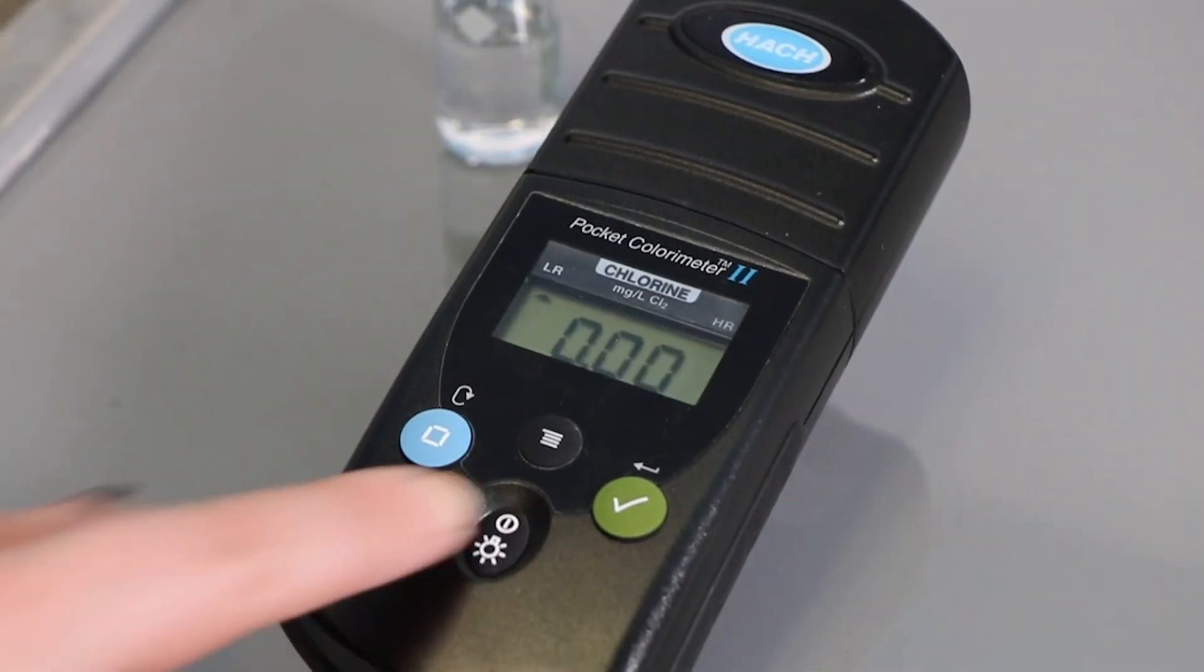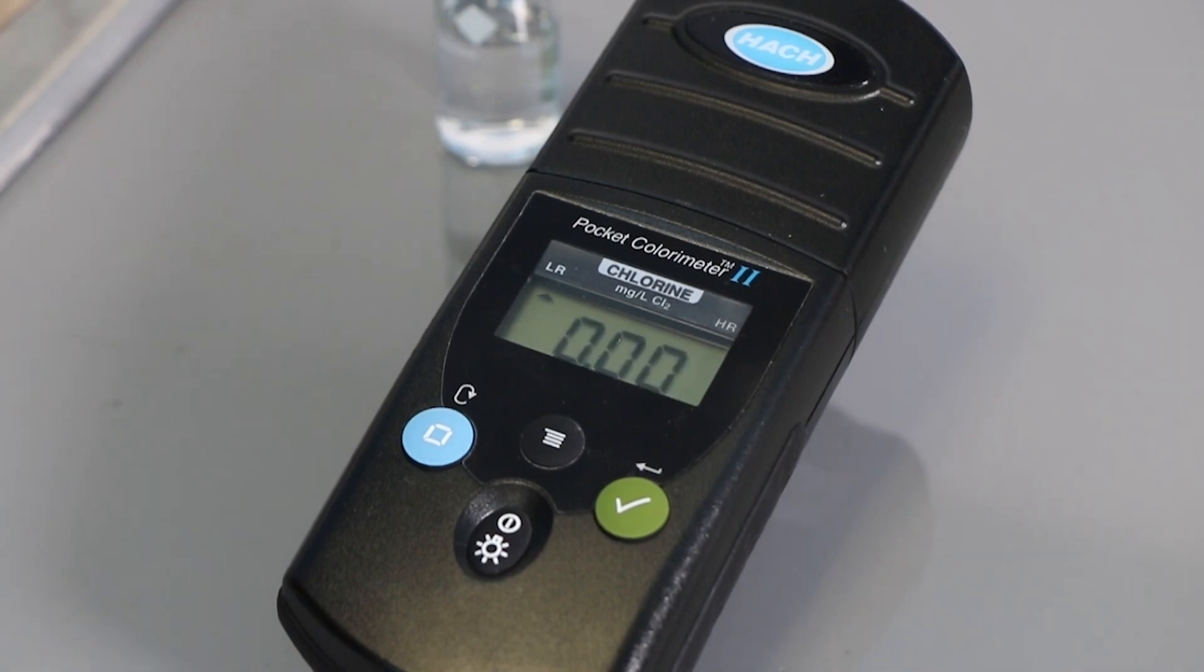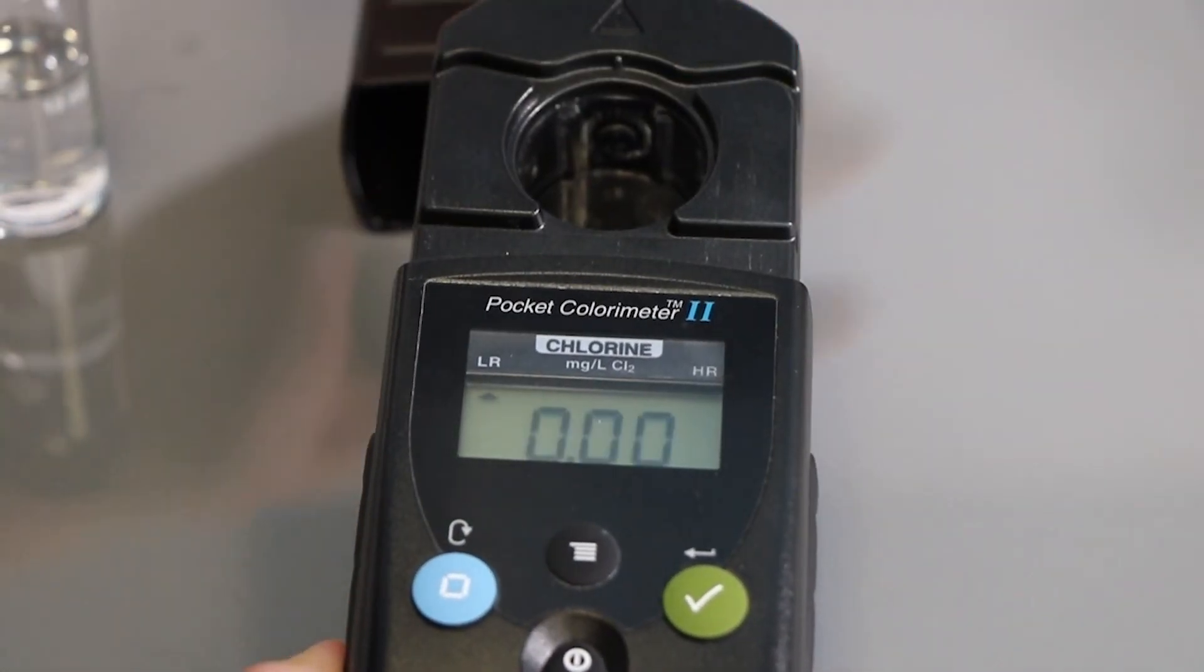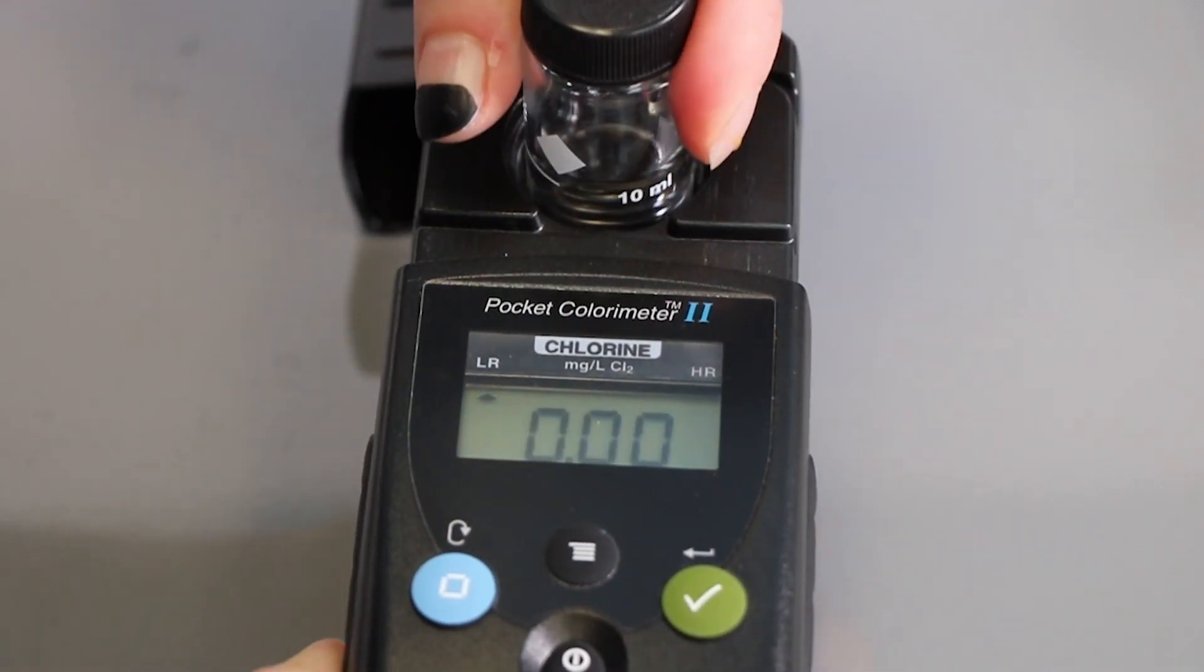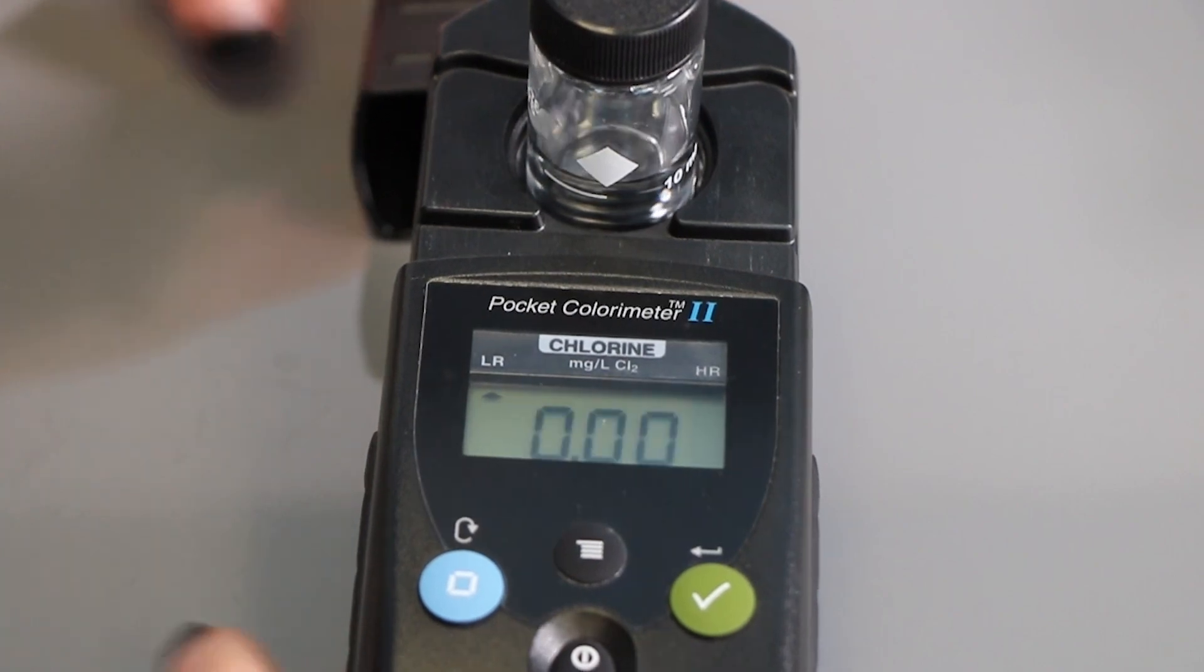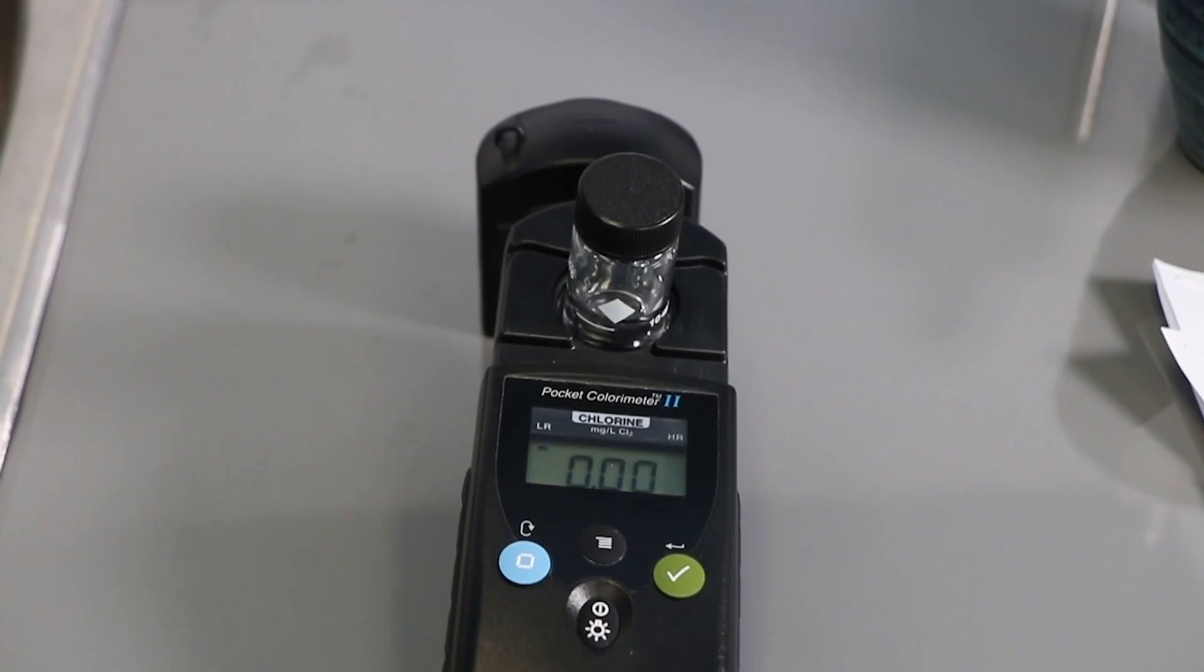Turn on the meter. Remove the cover from the pocket chlorometer and place the sample vial in the measuring chamber. Make sure the diamond-shaped marker is facing towards the screen. Replace the cover.